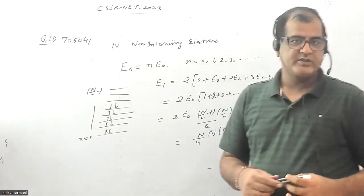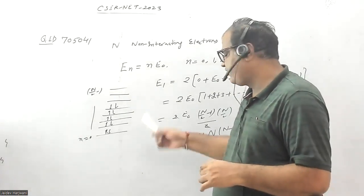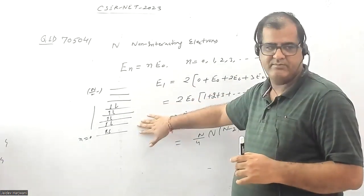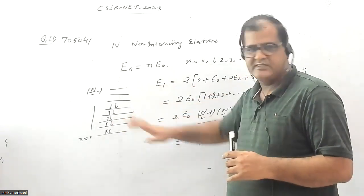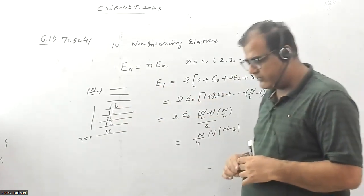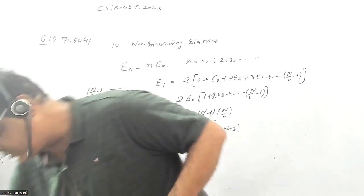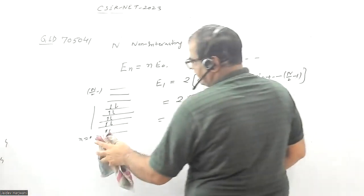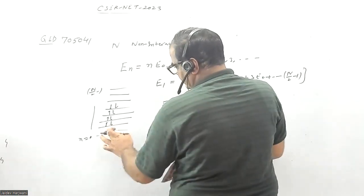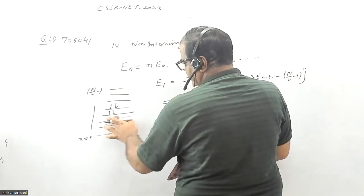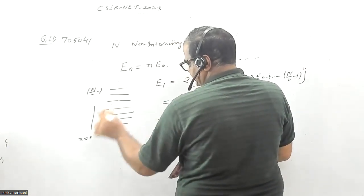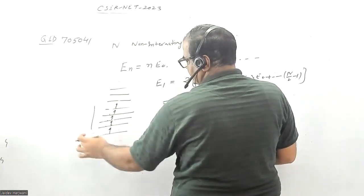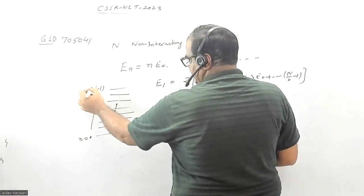Now the question states that a magnetic field is applied which does not alter the energy levels but only polarizes these electrons. So now all the electrons will be either spin up or spin down. We can only fill one electron in each level now. In this case, you have to fill only one electron in one system. Obviously now the level will go from n equal to 0 to N minus 1.